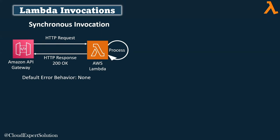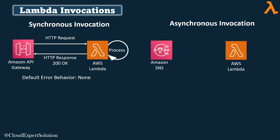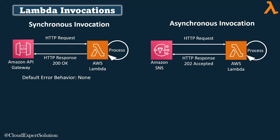The next invocation type is asynchronous. Unlike synchronous invocation, the client will not wait for the response. Let's say Amazon SNS is invoking AWS Lambda: SNS sends the HTTP request to Lambda, and before processing, Lambda passes an acknowledgement that the request has been queued with HTTP response code 202 — irrespective of the processing status. Lambda then processes the request, but the processing outcome or status will not be delivered to the client. By default, if processing fails, Lambda will retry two times — meaning the request will be processed three times total. Lambda will discard the request if processing is not successful even after two retries.